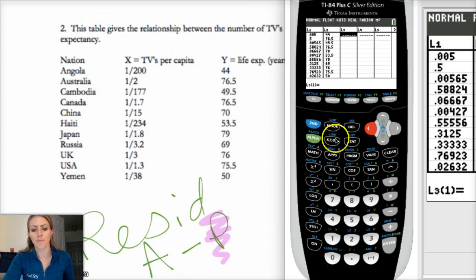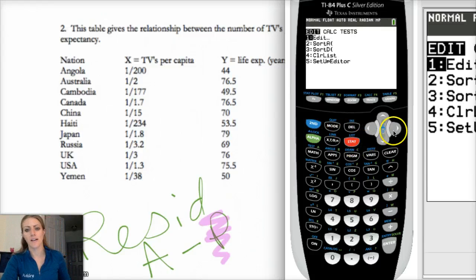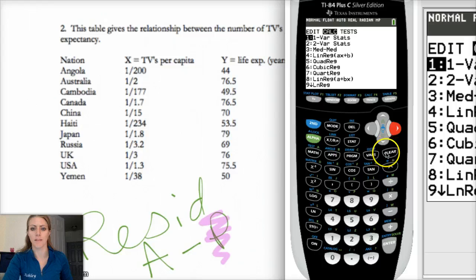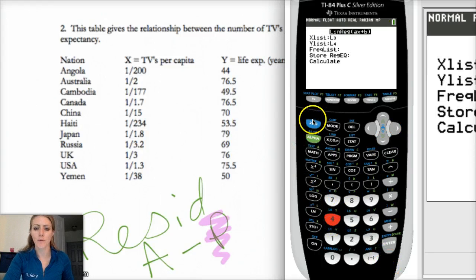So go to the place where you get your regression line, stat, calc, and then linreg for AX plus B. We want to do that on L1 and L2. And get your regression line. And calculate.